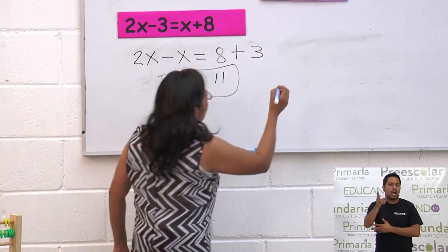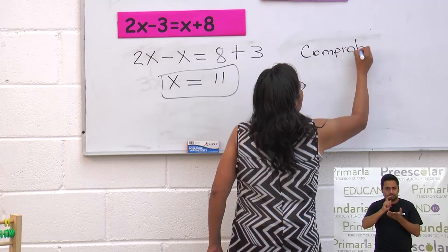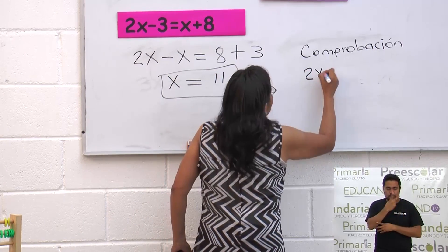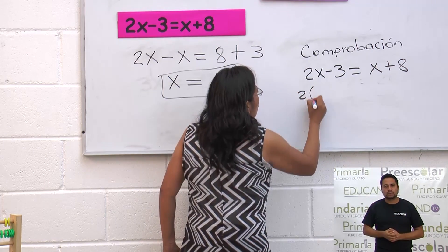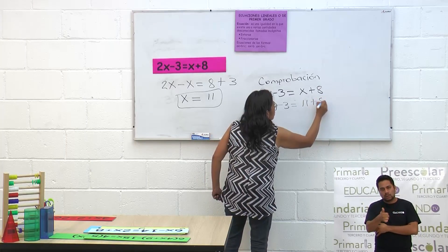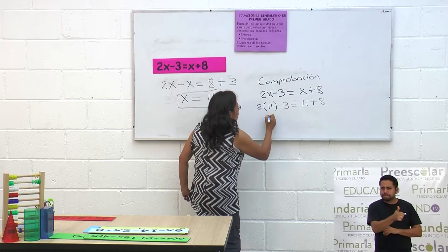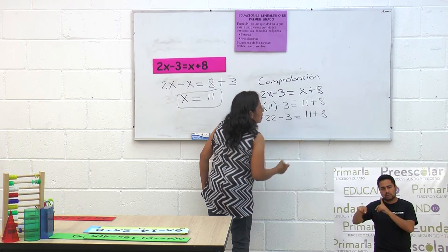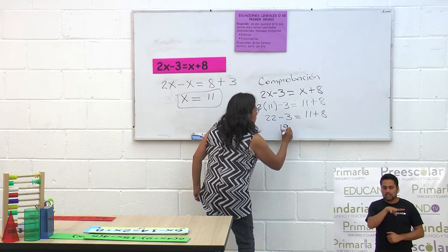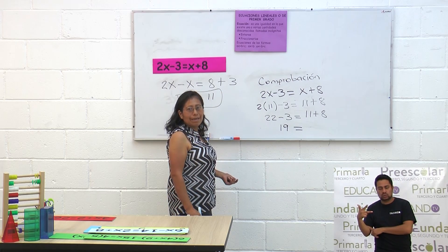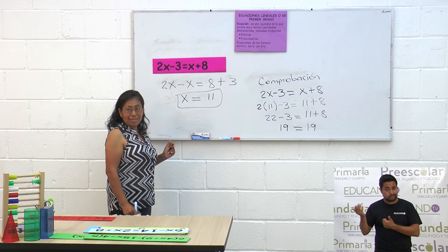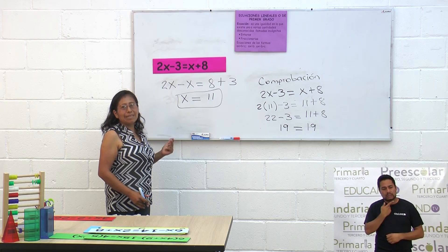Ahora vamos a hacer la comprobación. Siempre es necesario hacer la comprobación para verificar si nuestro valor es correcto. Tenemos 2x menos 3 igual a x más 8. En lugar de x vamos a poner el valor 11. 2 por 11 menos 3 igual a 11 más 8. 2 por 11 es 22; 22 menos 3 igual a 11 más 8. 22 menos 3 es 19; 11 más 8 es 19. Ya tenemos nuestra igualdad. El valor de x es correcto. Es cuestión de saber cómo hacer el procedimiento.